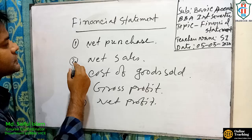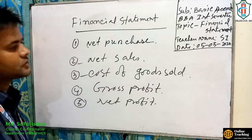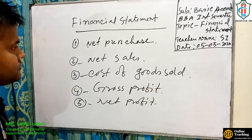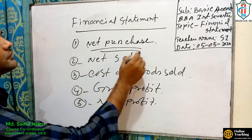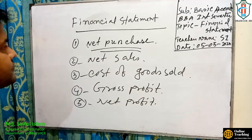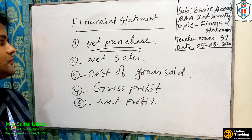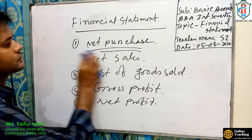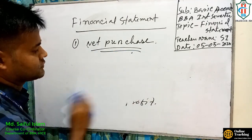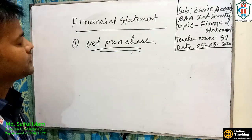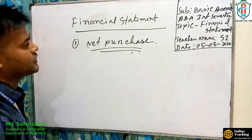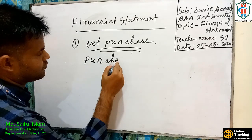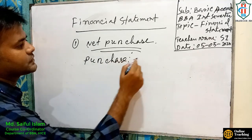We have net purchases, net sales, cost of goods sold, gross profit, and net profit. First, let us see how to calculate net purchases. We will calculate net purchases in the following way: first, gross purchases.